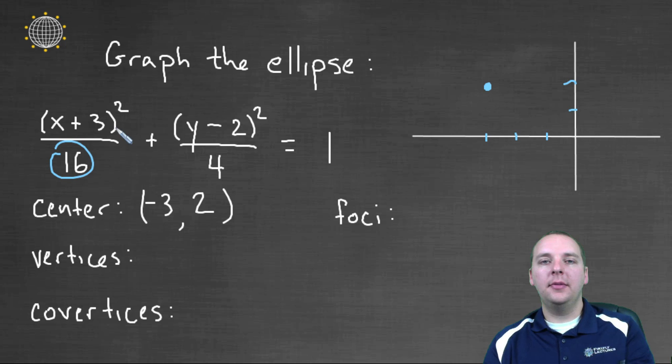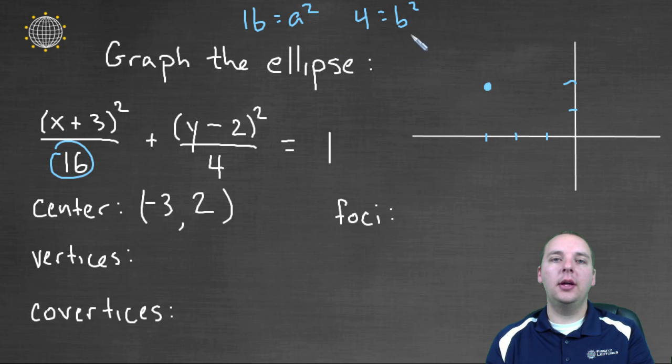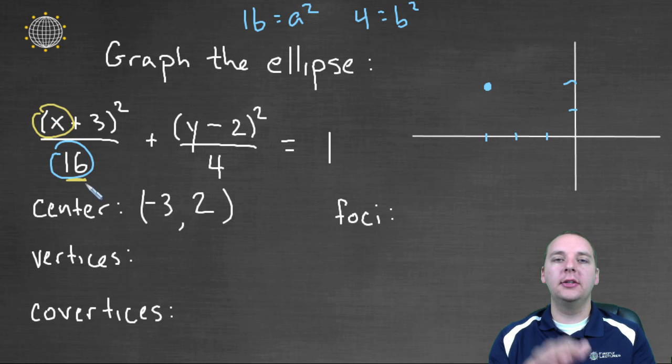And the sixteen is a², and the four is your b². The a² is always the larger number, and the b² is always the smaller number. So in this case, a is 4 and b is 2. Now remember what a and b are representing: a is representing the distance from the center along the major axis, and b is representing the distance to the co-vertices on the minor axis. Since the x is going with the sixteen, it's going to be wider than it is tall. If the y went with the larger sixteen instead of four, it would be taller than it was wide.